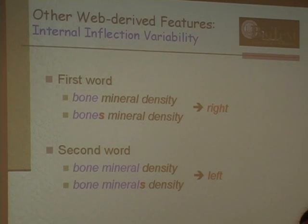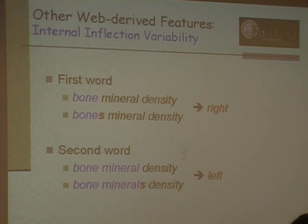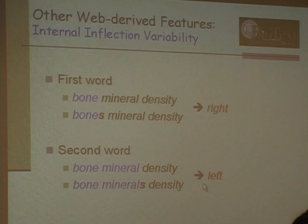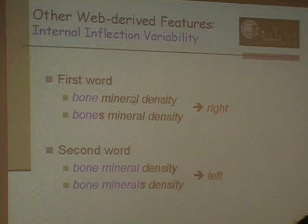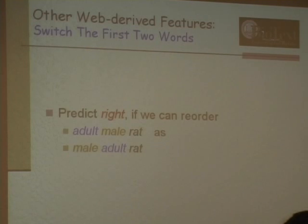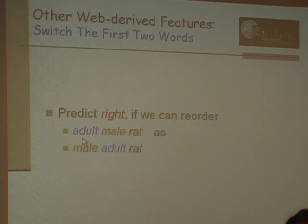Internal inflection variability is another feature. For 'bone mineral density,' if you see inflections on the middle word — 'bone minerals density' — those two words go together, suggesting right bracketing. If inflection occurs on the first word, it suggests left bracketing. Another feature: modifier switching. For 'adult male rat' (right bracketing), you can sometimes find 'male adult rat,' which is evidence for right bracketing. You cannot do this with left bracketing.